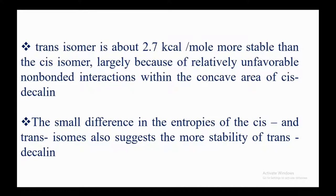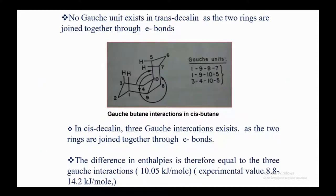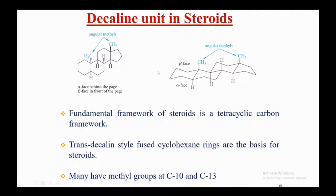The small difference in entropies of the cis and trans isomers also supports the greater stability of trans-decalin. No gauche interactions exist in trans-decalin, as the two rings are joined through equatorial bonds. In cis-decalin, three gauche interactions exist, so the difference in enthalpies equals three gauche interactions — with experimental values of approximately 10.05, 8.8, and 14.2 kJ/mol.